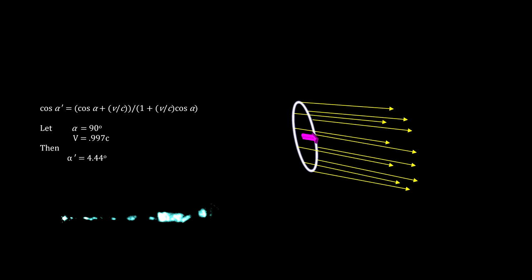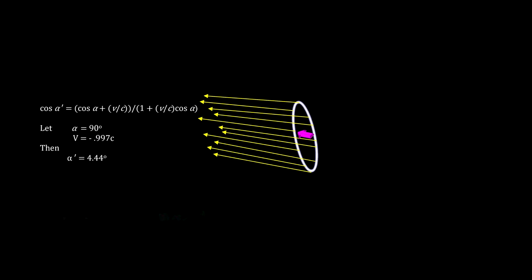And because the jet moving in the opposite direction will have their photons beamed away from the observer, the jet becomes invisible. This explains why we see only one jet in M87.